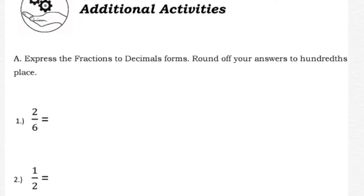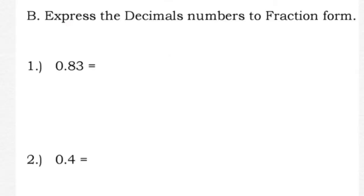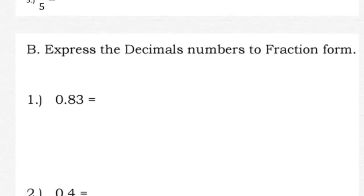For Additional Activities: Part A, express the fractions to decimal form, rounding off answers to the hundredths place (two decimal places) — five numbers. Part B, express the decimal numbers to fraction form — also five numbers. Apply what you have learned in our discussion. That's it for this video — thank you and have a good day!